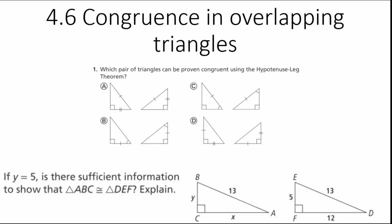All right guys, let's finish topic 4 with 4.6. Today we're going to talk about congruent and overlapping triangles. I've been telling you all year about the importance of the reflexive property and why we're going to be using it a lot. What we're going to do first is look back on what we learned in our last class: the hypotenuse-leg theorem. The question asks which pair of triangles can be proven congruent using the hypotenuse-leg theorem — choices A, B, C, and D. We'll go through all of them. For each, I ask those three questions; the first is: are they both right triangles?